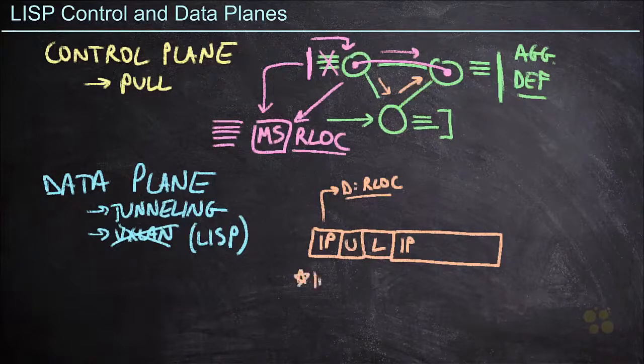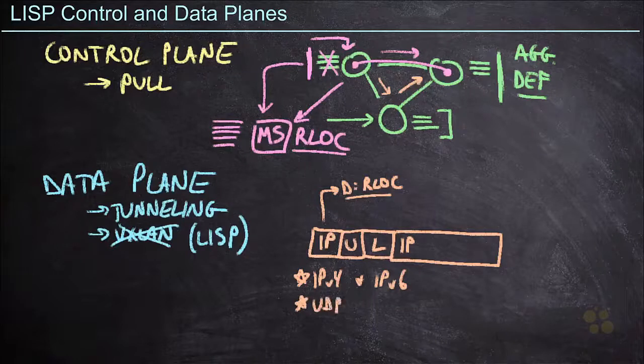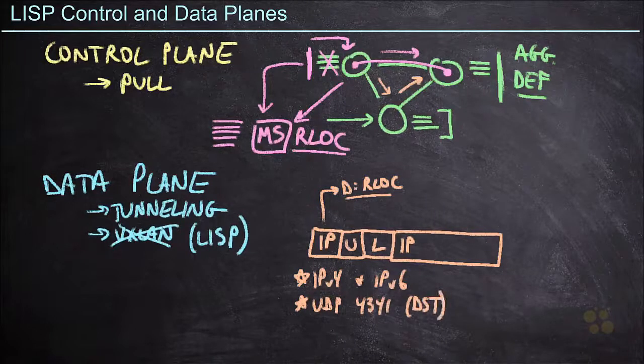First of all, we support both IP version 4 and IP version 6 using the same mechanism. Second of all, the UDP port is chosen to be 4341 as the destination. The source port is going to vary depending on how we want to load balance this within the network.